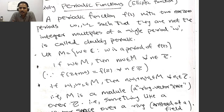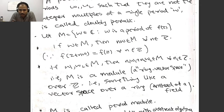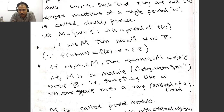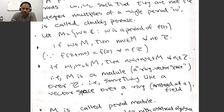For a doubly periodic function, all periods should be generated by two periods ω₁ and ω₂ which are linearly independent over ℤ — that is, they are not integer multiples of the same period ω. A set with this property, where there is addition and scalar multiplication with scalars from a ring, is called a module — like a vector space but over a ring rather than a field. The set of all periods of f forms such a structure, called the period module.